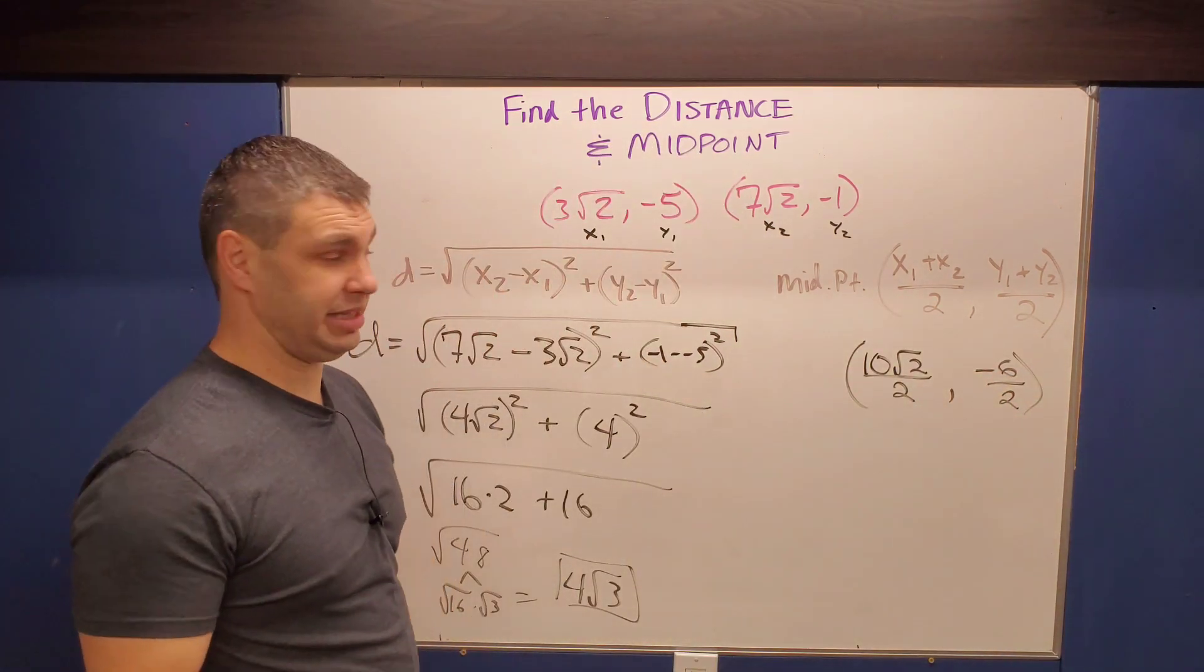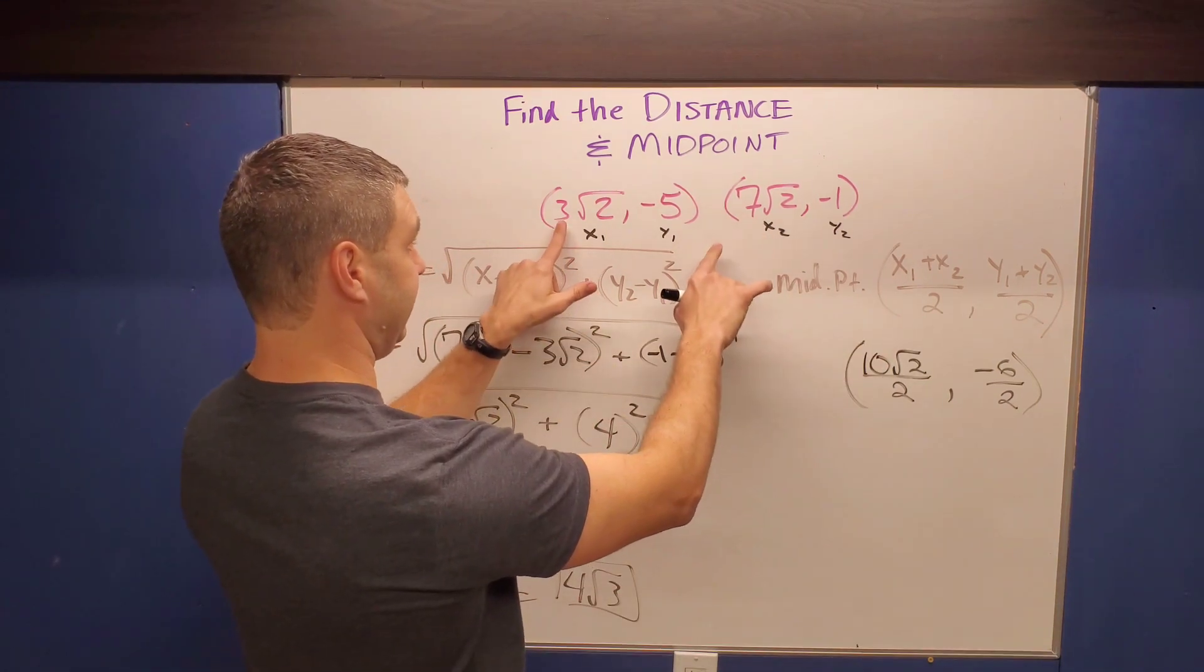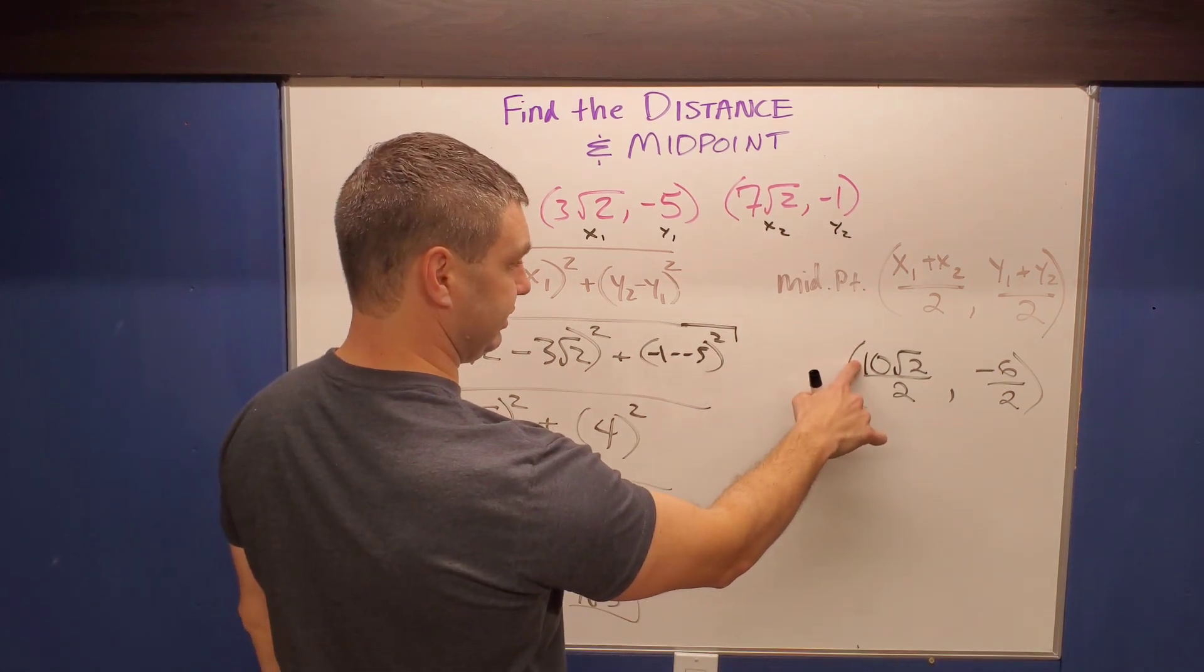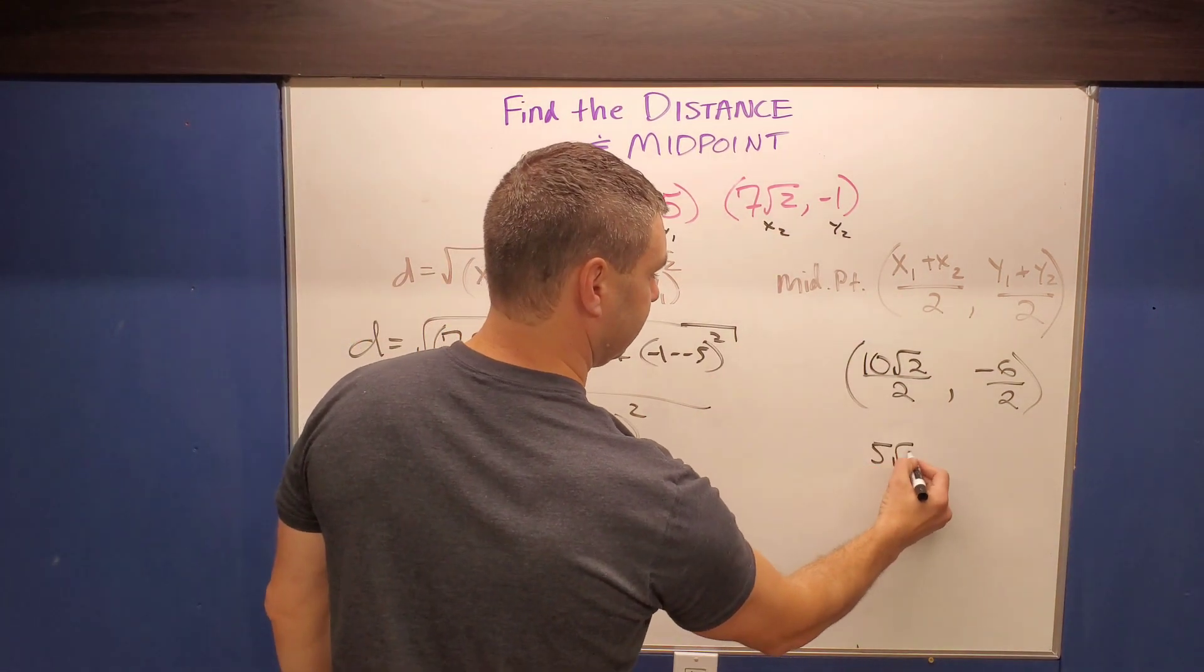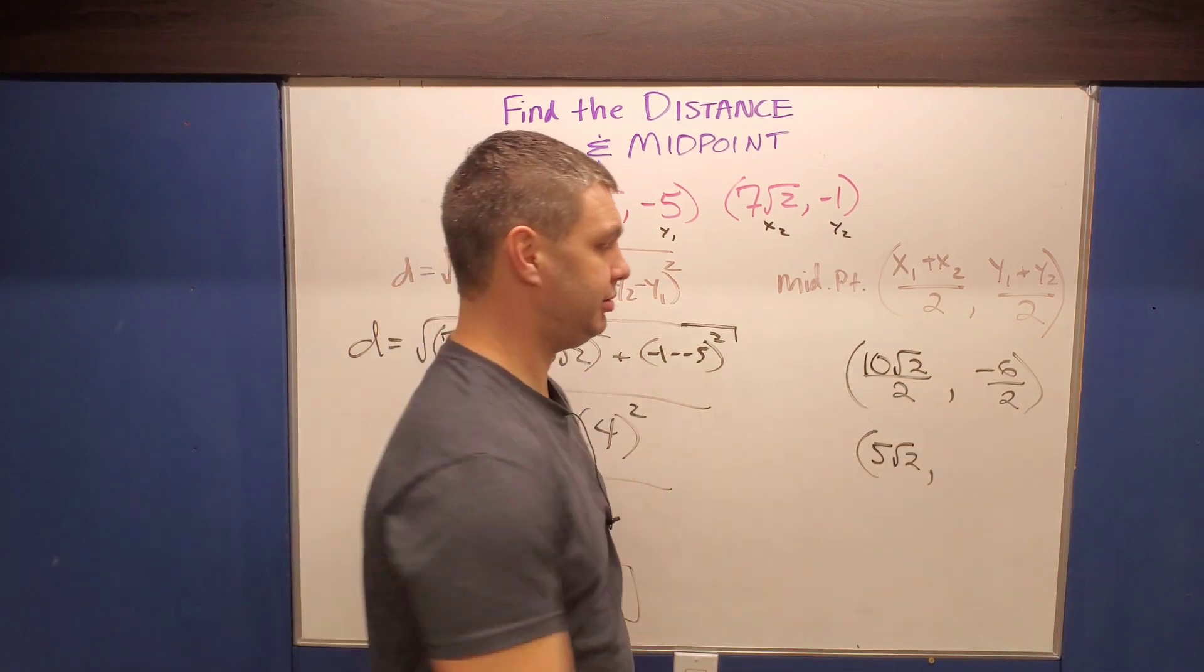And so you can see, this is just gonna be the average, right? It's gonna be the point in between those. You might even not have to write it out. You can maybe look at it and say, between three and seven is going to be five. And that's what this is, right? 10 divided by two is five square roots of two, comma, negative six divided by two is a negative three.